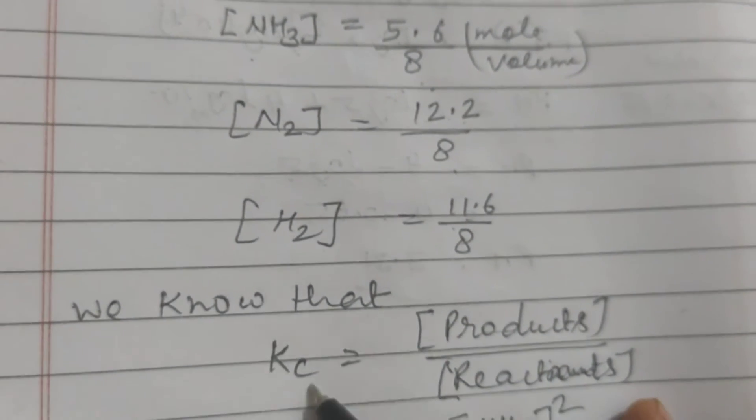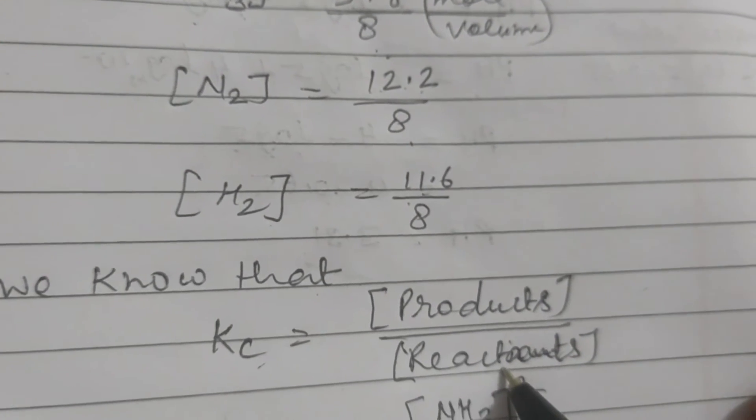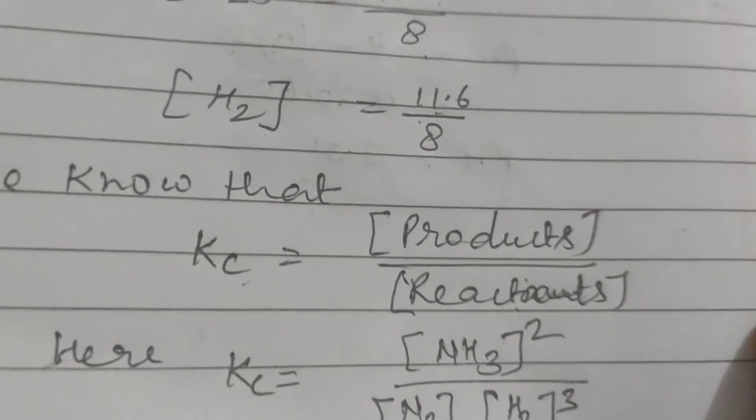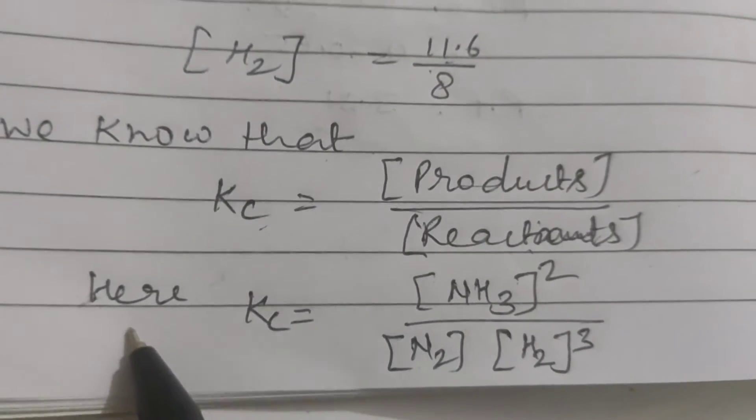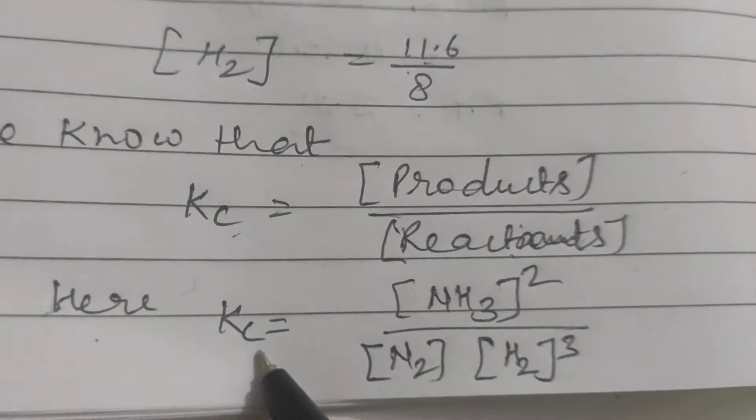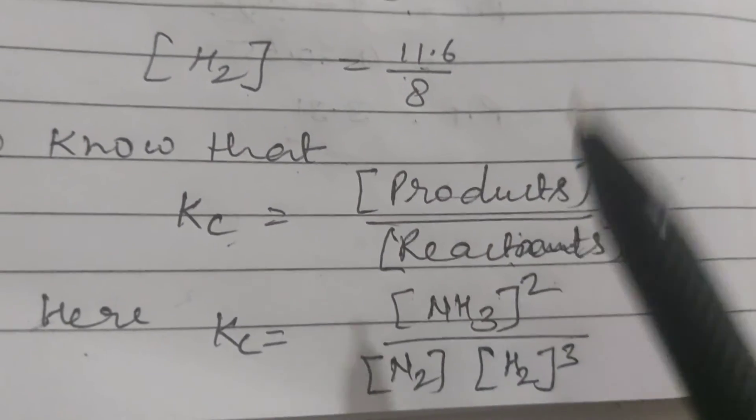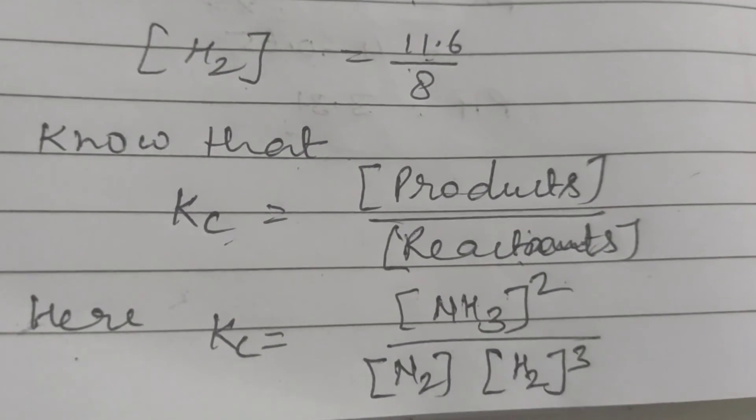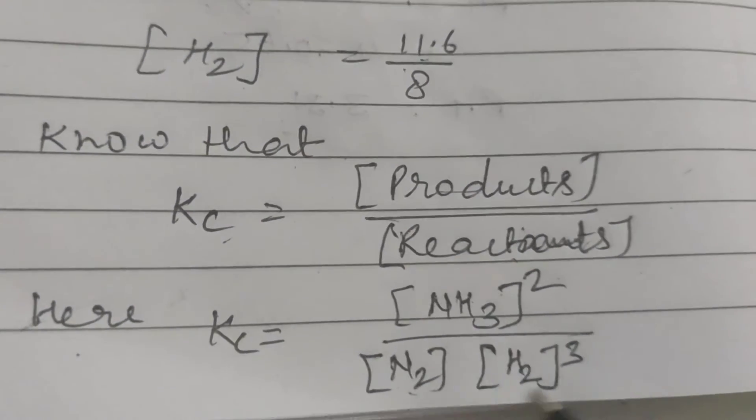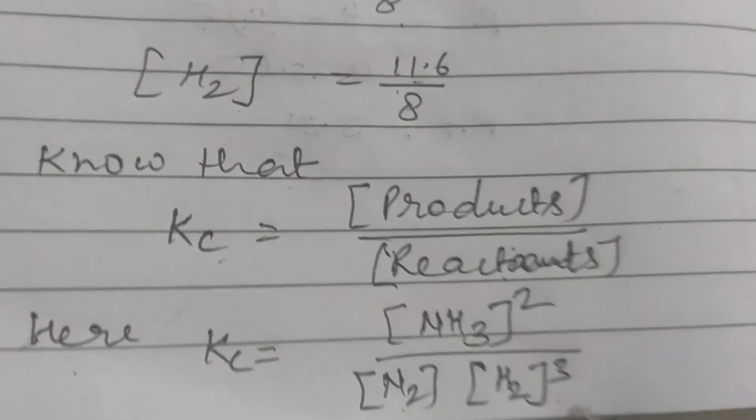We know that Kc equals to concentration of product upon concentration of reactant. So for this equation, our Kc formula will be Kc equals to concentration of ammonia to power 2, because there is 2 moles of ammonia formed, upon concentration of N2 into concentration of H2 to power 3.